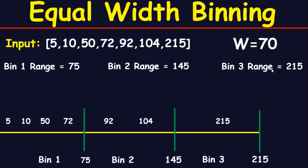Bin number 1 will accept numbers up to 75, but this upper boundary is exclusive. This means if we have 75 in the data, it will not go into bin number 1 — it will go into bin number 2. However, for the last bin, the upper boundary is inclusive.